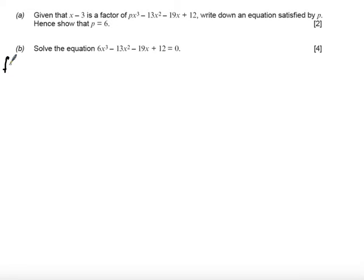So I'm just going to start this question by stating that we're going to take f of x as the function px cubed minus 13x squared minus 19x plus 12, and what we know is that since x minus 3 is a factor by factor theorem,